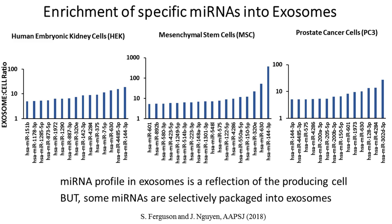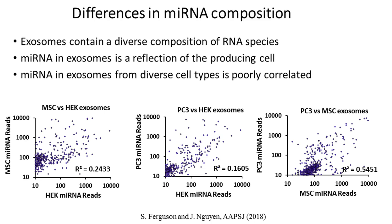Human embryonic kidney cell exosomes have a different unique microRNA profile compared to mesenchymal stem cell exosomes and prostate cancer exosomes. The microRNAs between exosomes from different cells show really poor correlations with one another, and each exosome seems to have a unique fingerprint. This supports the belief that cells send out exosomes to modulate their microenvironment, and highlights the importance of characterizing exosomes before use as drug carriers, since their cellular source affects microRNA composition and thus biological function.